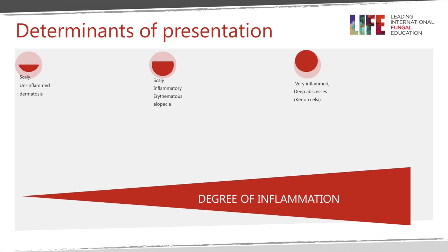What determines how Tinea Capitis looks on the scalp of a child is the degree of inflammation. You have a spectrum: at one end, a scaly dermatosis with very little or no inflammation; at the other end, very inflamed or deep abscesses sometimes known as Kerion Celsi. With very inflamed types you have higher degrees of inflammation, and in between you have alopecia with erythema or pustules.